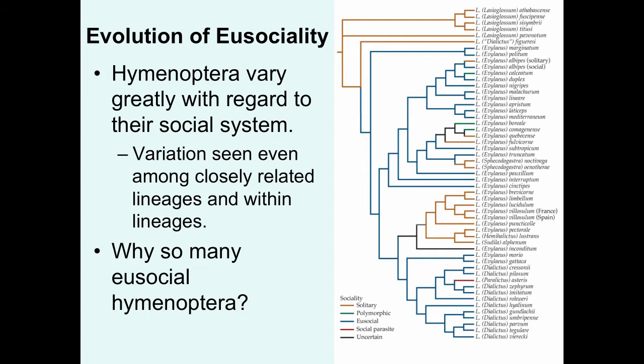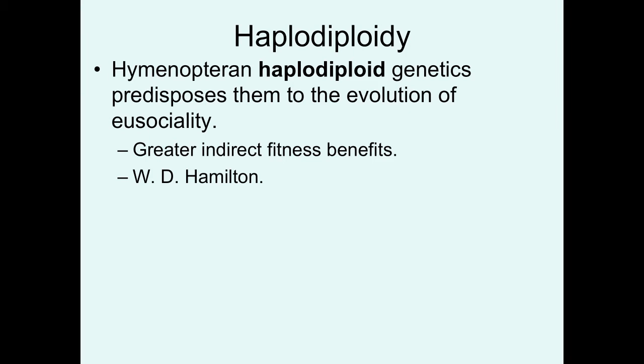Why is eusociality so common in the Hymenoptera? One reason potentially is haplodiploidy. Hymenoptera have very different genetics that may predispose them to the evolution of eusociality. This different genetic system — called haplodiploidy — provides the potential for greater indirect fitness benefits of helping relatives, because certain individuals are more closely related to each other than you typically see in most diploid species. This was a main topic of research by W.D. Hamilton, famous for Hamilton's rule.